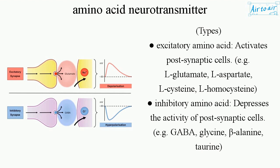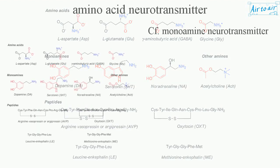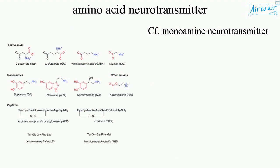Examples of inhibitory amino acid neurotransmitters include GABA, Glycine, and Beta-Alanine.